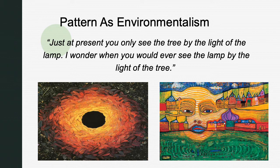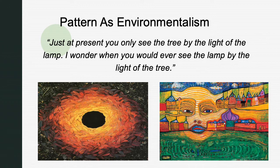Pattern as environmentalism: Goldsworthy is aware of the ephemeral qualities of his work, so he documents his activity with photographs in a series of inspirational books. 'Rowan Leaves Laid Around a Hole' — the title of the left image — uses the changing pigmentation of autumn leaves to create a circular pattern of colors. It radiates energy in a sunburst of vibrant yellows through flaming reds to a deep purple that subtly blends into the browns and blacks of the earth. At its center lies the invisible source of its power — a black hole. There is something of the cosmic in the art of Andy Goldsworthy.